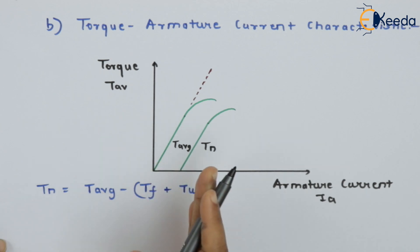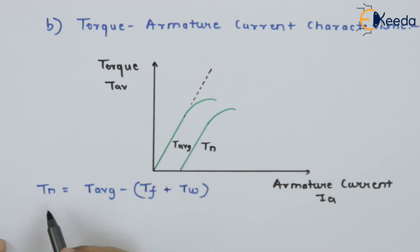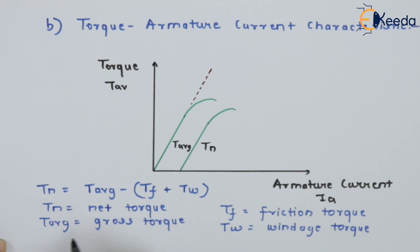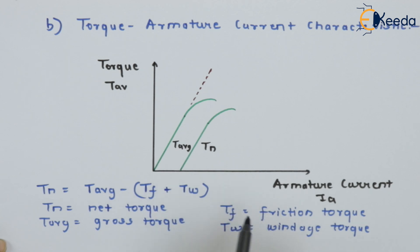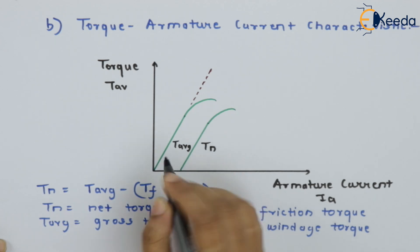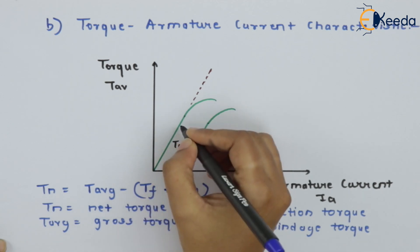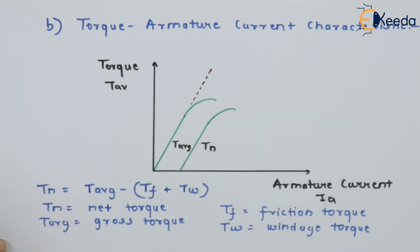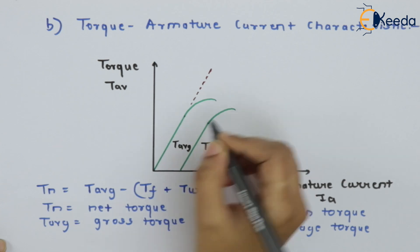For low values of current, that is at no-load condition, we have assumed flux as constant. Hence, the characteristic of torque versus armature current is a straight line. But at higher values of current, that is when the load goes on increasing, the effect of armature reaction is seen on the torque, and the torque slightly goes on decreasing.